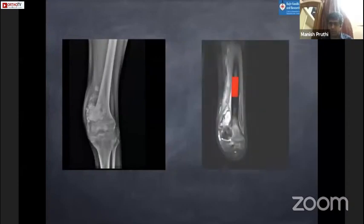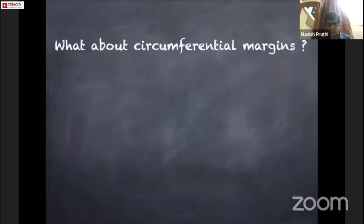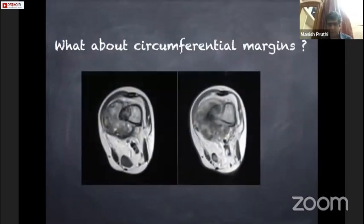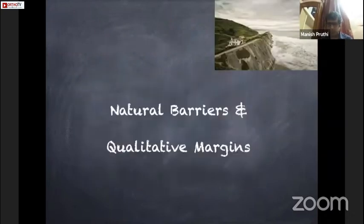The concept of margins: intralesional margin is when we go into the tumor; marginal margin is when we go close to the tumor in the pseudocapsule; wide margin is when we go through normal tissue; and radical margin is an extra-compartmental excision. In our osteosarcoma of the lower end of the femur, longitudinal margins are easy to measure, but circumferential margins are more challenging when the neurovascular bundle and skin are less than 2 cm from the tumor.